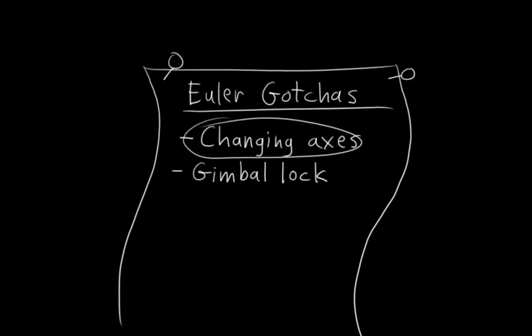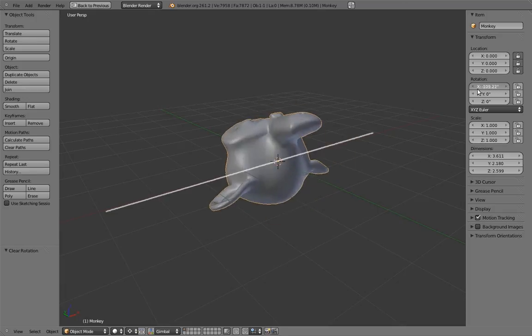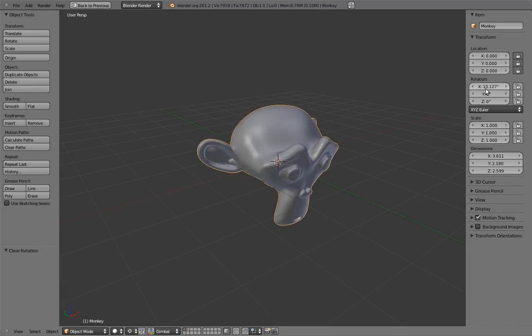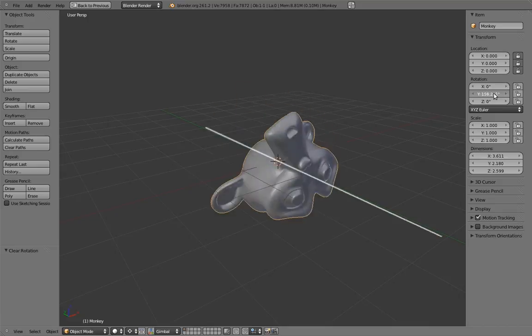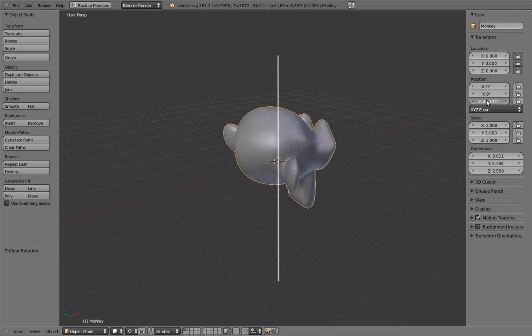To better explain this, let's switch over into Blender and take a look at how Eulers work on this monkey head. In the end panel, we can see the three angles for rotating around each of the three axes. If we play with the x value, the monkey head rotates around the x-axis. Likewise, if we play around with the y value, the monkey head rotates around the y-axis. And the same with the z value in the z-axis.